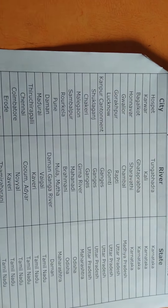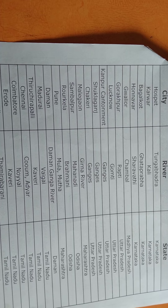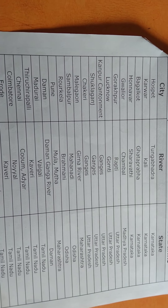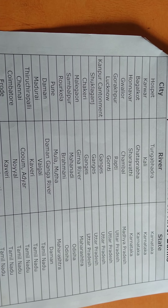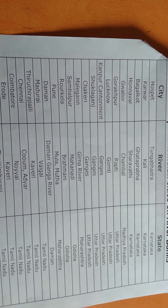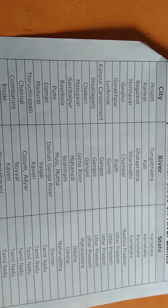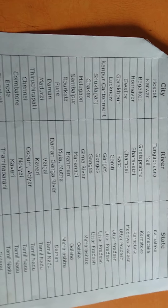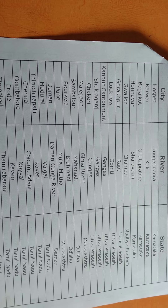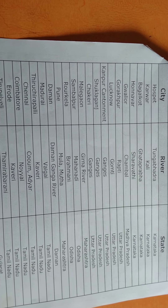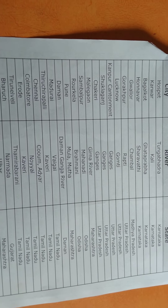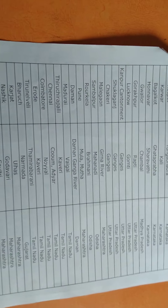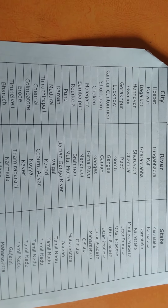Our first city is Hospet. Hospet is in Karnataka and the river that flows is Tungabhadra. The second one is Karwar — Kali is the river and Karwar is the city, and the state is again Karnataka.